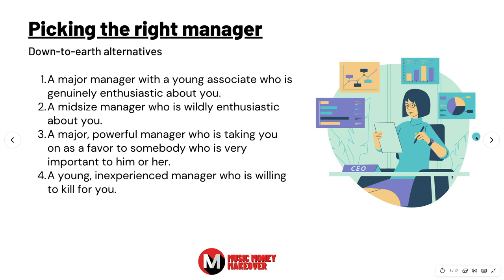Picking the right manager — down-to-earth alternatives. Option one: a manager with a young associate who is genuinely enthusiastic about you. This works because if the associate is enthusiastic about you, the manager will get excited. The associate will end up doing a lot of work for the manager, but at least somebody is helping with passion. That passion and energy from the associate will help get you off the ground.